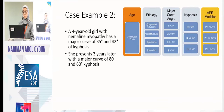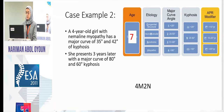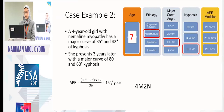Case example two: a four-year-old girl with nemaline myopathy, major curve of 35 degrees and kyphosis of 42 degrees. She's a four, etiology M, major curve 35 gives a two, kyphosis 42 is within normal range so it's N. Her initial classification is 4M2N. Three years later she returns with a major curve of 80 degrees. Now she's seven, curve is M, major curve gives a three, kyphosis is now plus, and the APR equals 15 degrees per year, giving P1. Her second classification is 7M3-plus-P1.